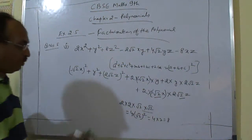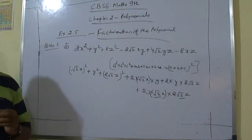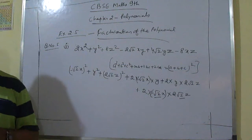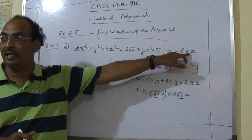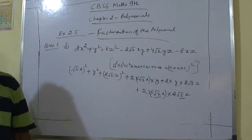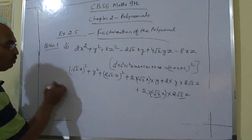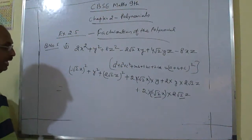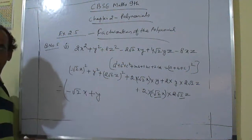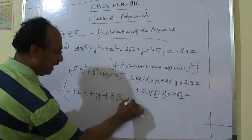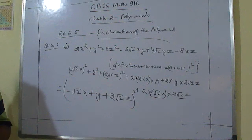So the final answer is (−√2·x + y + 2√2·z)². When you see a minus sign, identify which term is negative by checking where that variable appears across all cross terms. The question is now solved.